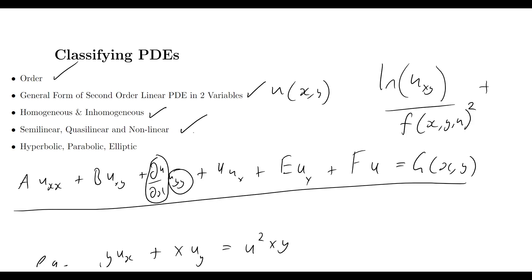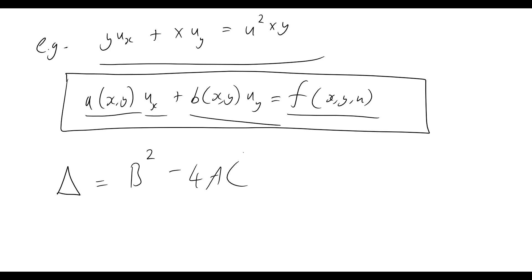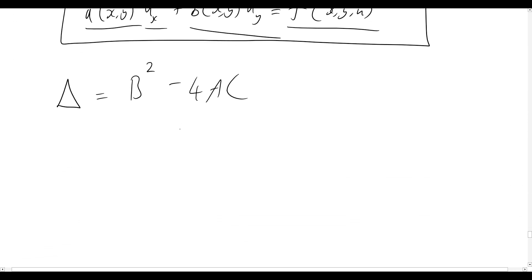That brings us to our last topic: hyperbolic, parabolic, and elliptic. We'll return to the general form and introduce the discriminant — b² − 4ac — which you'll recognize from the quadratic formula. Here a, b, and c refer to the coefficients in our general second order PDE: a is the coefficient of u_xx, c is the coefficient of u_yy, and b is the coefficient of the mixed partial derivative u_xy.